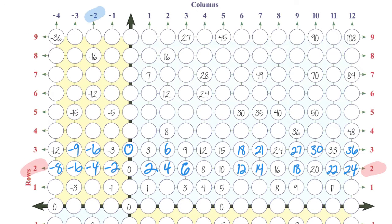Now we're going to look at column negative two and start filling this in. Starting at the top we have negative two times positive nine, that's going to be negative 18. Next, eight times negative two is negative 16, then seven times negative two is negative 14, then negative 12, then negative 10, then five times negative two is negative eight, negative six, negative four — we've already filled in — then we'll have negative two, and then zero.